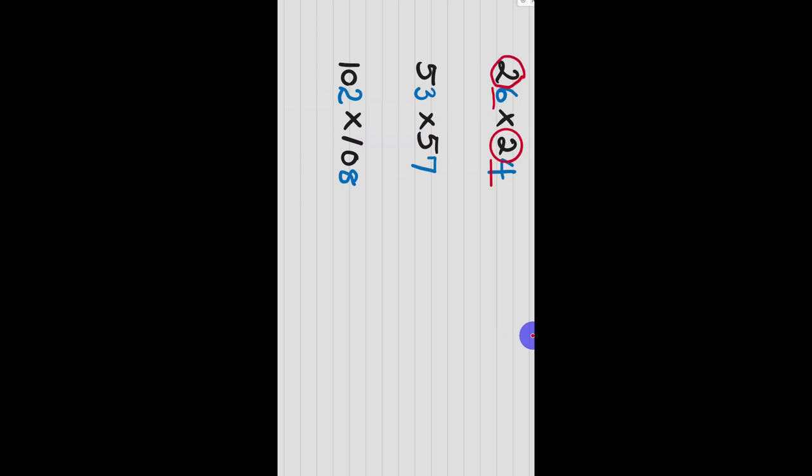So let's multiply them easily. First, you take the tens, which is two, you multiply it by the next number, which is three. Two times three is equal to six. You multiply the units, six times four is equal to 24. That is the answer.